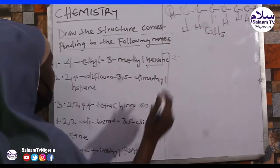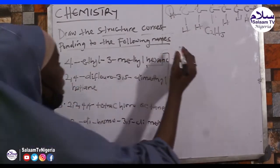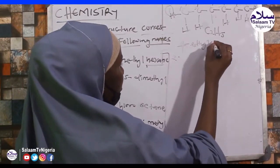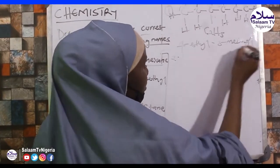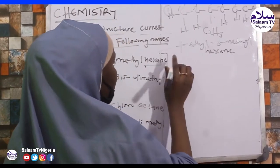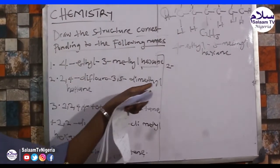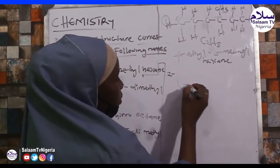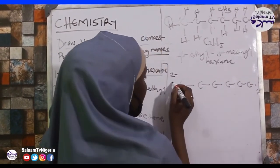Number 2: 2,4-difluoro-3,5-dimethylheptane. The parent name is heptane. Heptane has 7 carbons: 1, 2, 3, 4, 5, 6, 7.